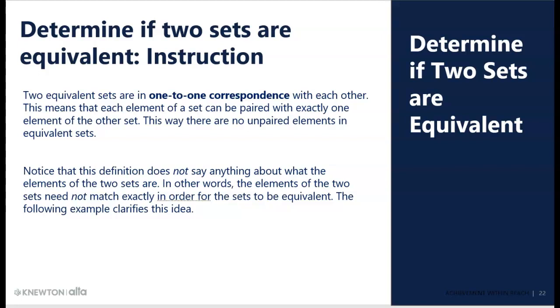So to be equivalent, it means they're in one-to-one correspondence. This is an idea in mathematics that is very important. It means you could draw a line from one element of one set to an element of the second set, and each element would be paired up with one and exactly one element in the other set. So it doesn't matter what is in the sets. They just have to have the same size to be equivalent.